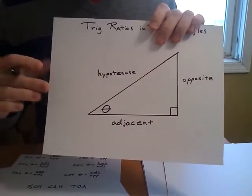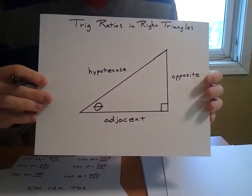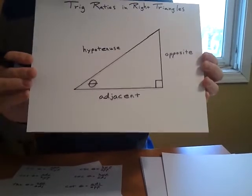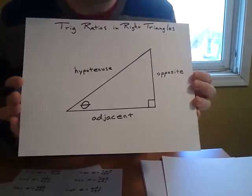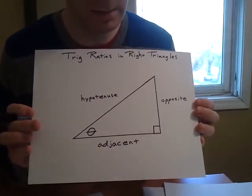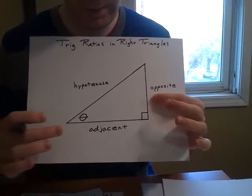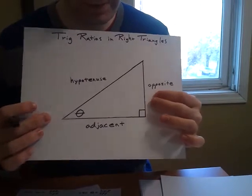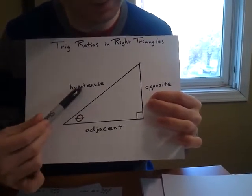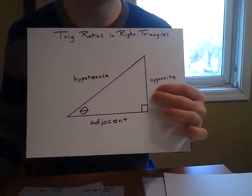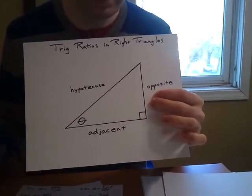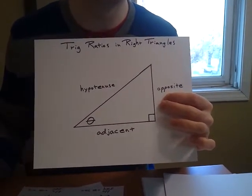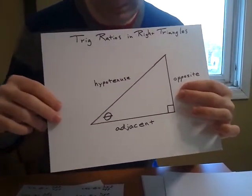In order to apply trig ratios correctly, you need to have a solid grasp of exactly where these guys are. The opposite is always going to be across from your angle. I think if you've got a good grasp on this one, everything else kind of falls into place. Hypotenuse is always across from the 90 degrees as well. This is your longest side always. Always. Alright?